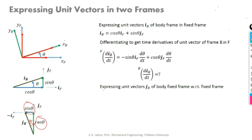So coming back: this component is cos theta and this one is sin theta. JB equals minus sin theta times IF plus cos theta times JF. The sign convention is that IF comes first by convention, so it is minus sin theta IF plus cos theta JF.